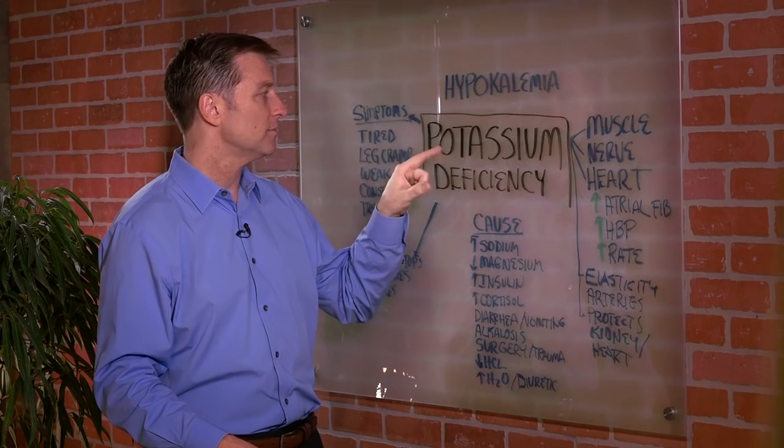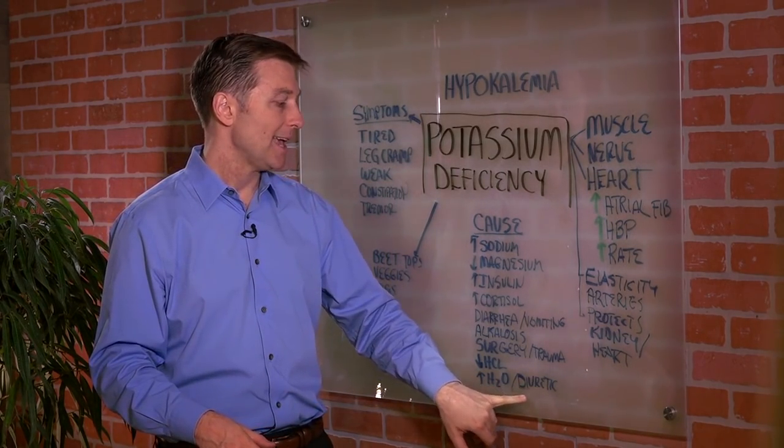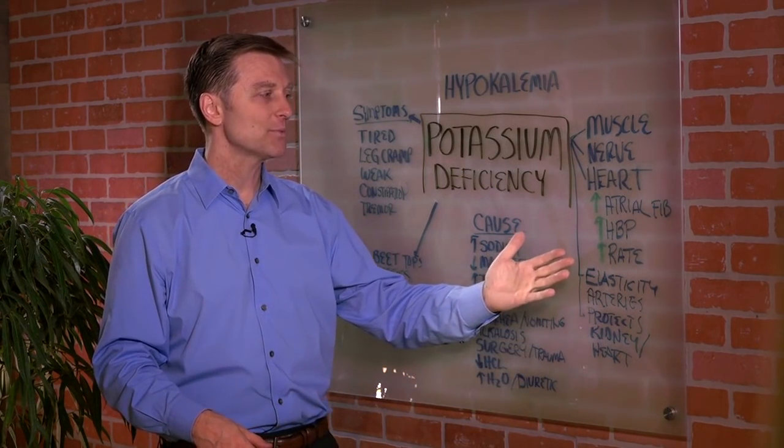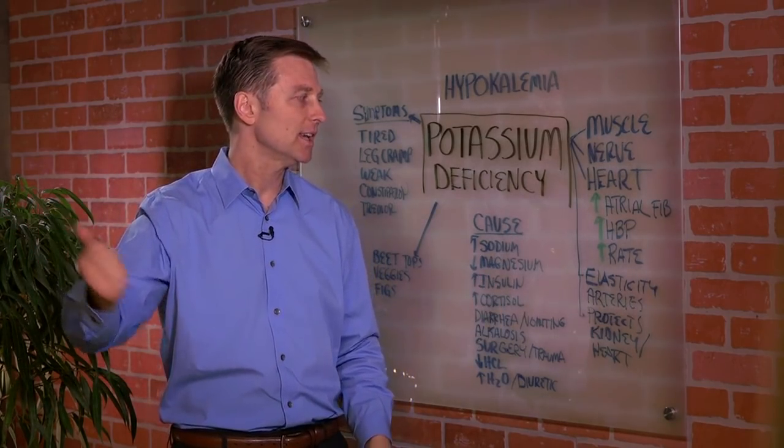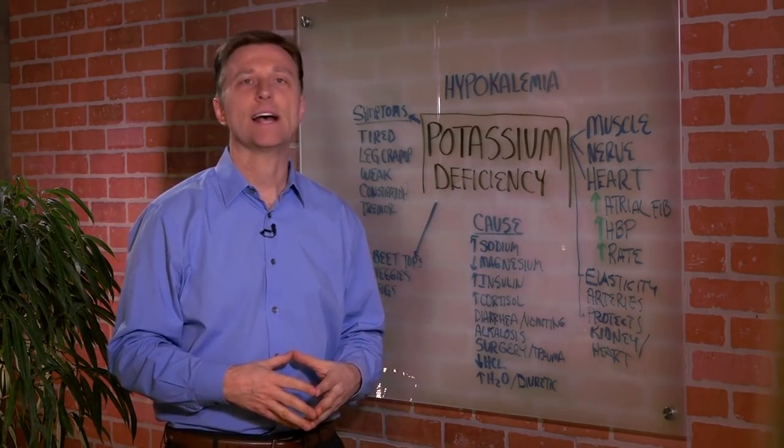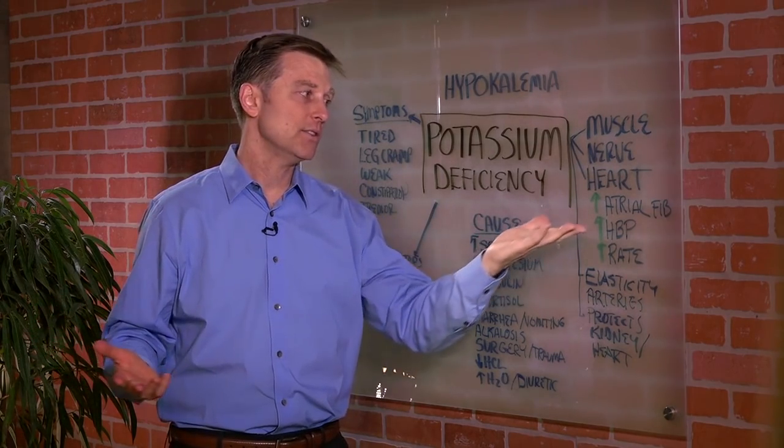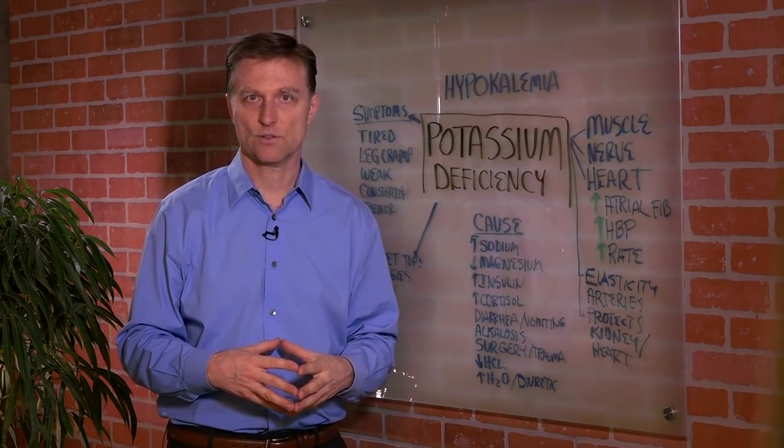Diuretic, that's another cause of potassium deficiencies. And that comes from when you're on high blood pressure, they give you a diuretic, and then you become potassium deficient. And then you continue to have high blood pressure. Crazy.